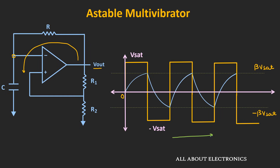The time period T of this astable multivibrator depends on the values of R and C, as well as the upper and lower threshold voltages, which means it also depends on R1 and R2. The time period of the square wave is given by the expression T = 2RC · ln((1+β)/(1−β)). Since the positive and negative saturation voltages are equal, the duty cycle of this square wave will be 50%.